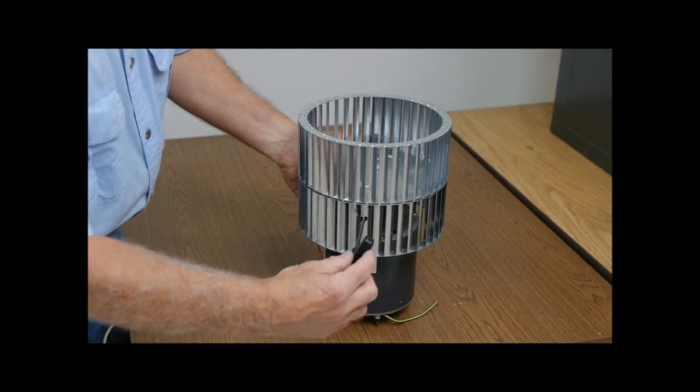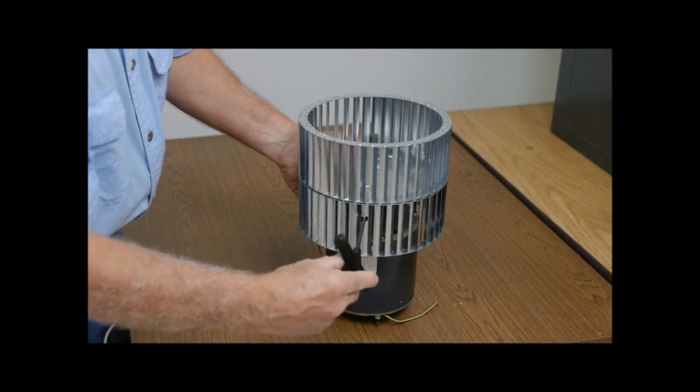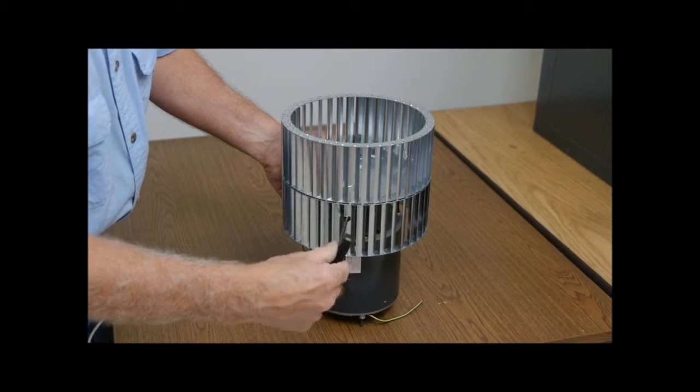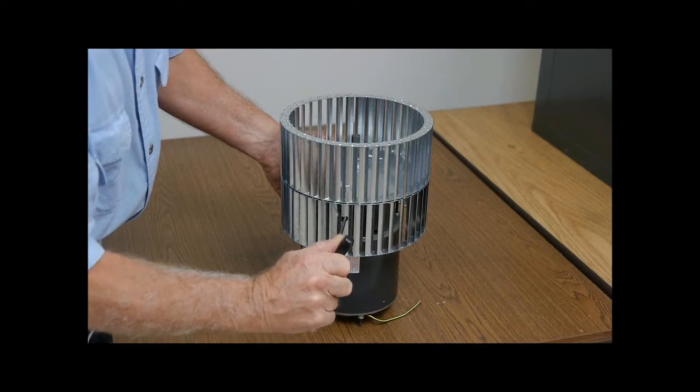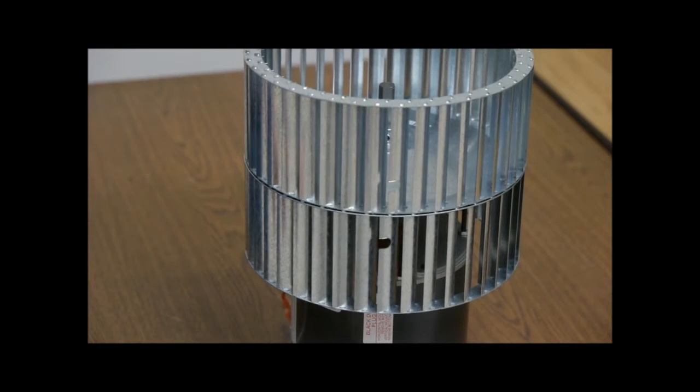Using a T wrench, tighten the set screw through the notch of the blade. If your wheel does not have a notch in one of the blades, then you should have room to place the T wrench between two blades to tighten the set screw.